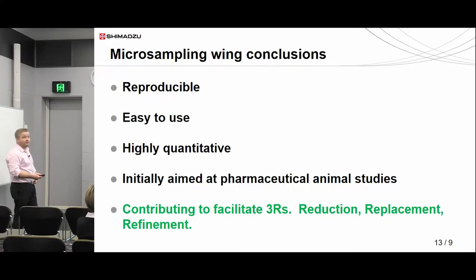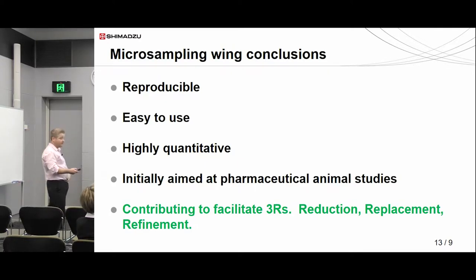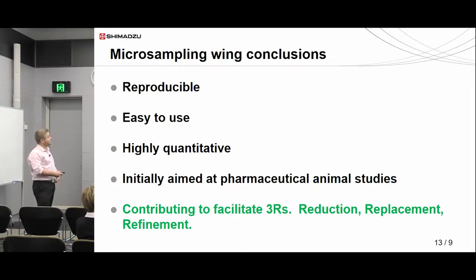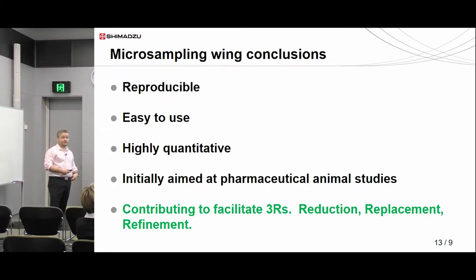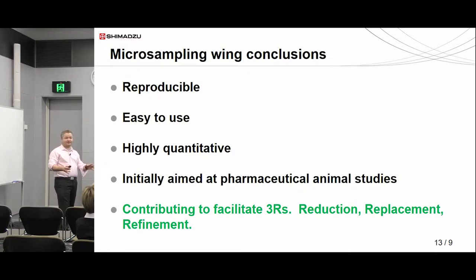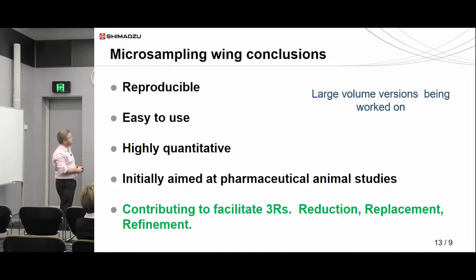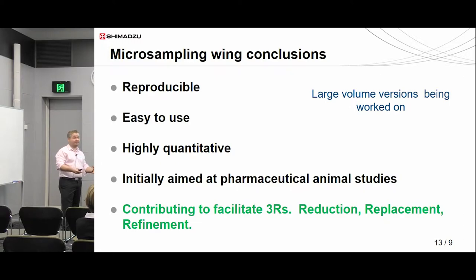I find this technique to be reproducible, the feedback we get is that it's easy to use, and we believe it to be highly quantitative. It was initially aimed at pharmaceutical animal studies, so cost was a secondary importance, and it contributed to the 3Rs — reduction, replacement, and refinement of taking samples from animals — but it can also be used in human studies. There are also larger volume versions in the pipeline, because sensitivity is of paramount importance and the more sample we can get with the least exposure for the patient, the better we can make our analytical techniques.